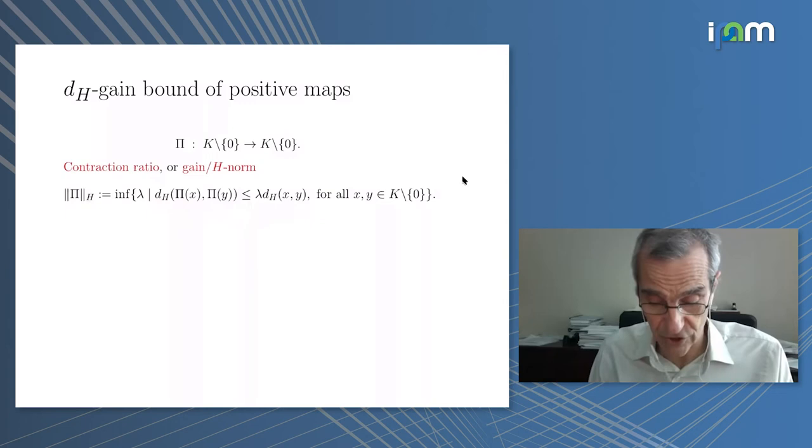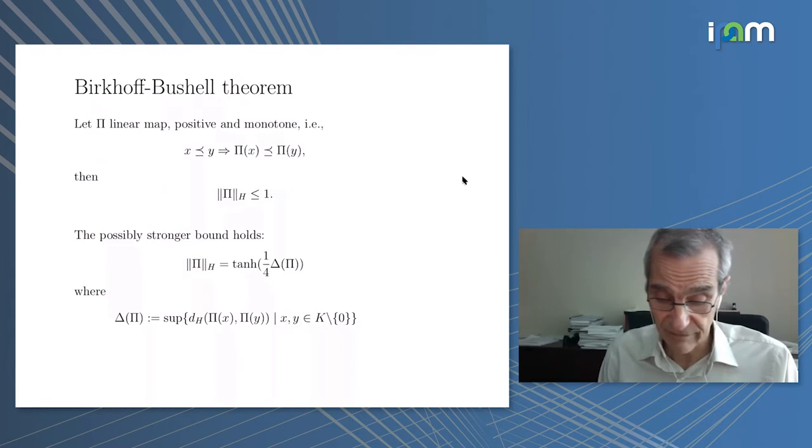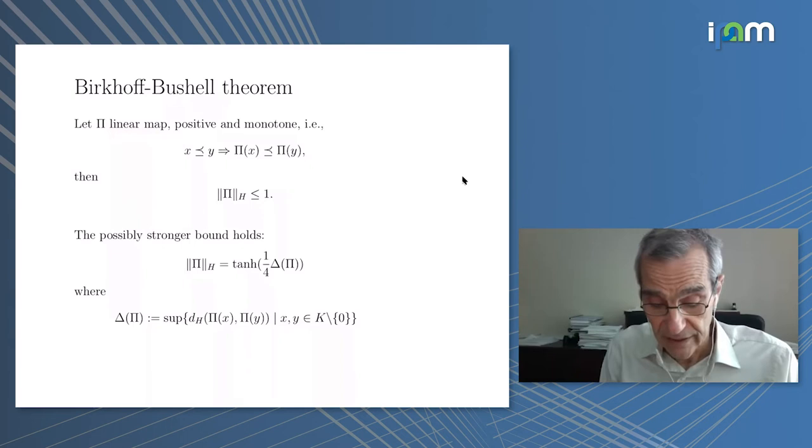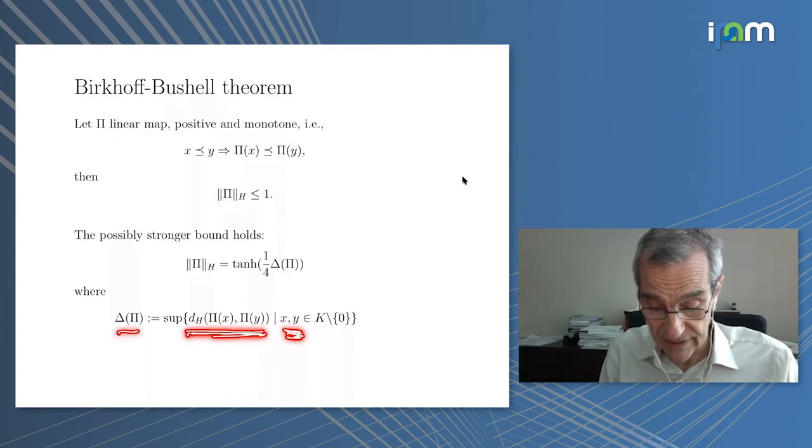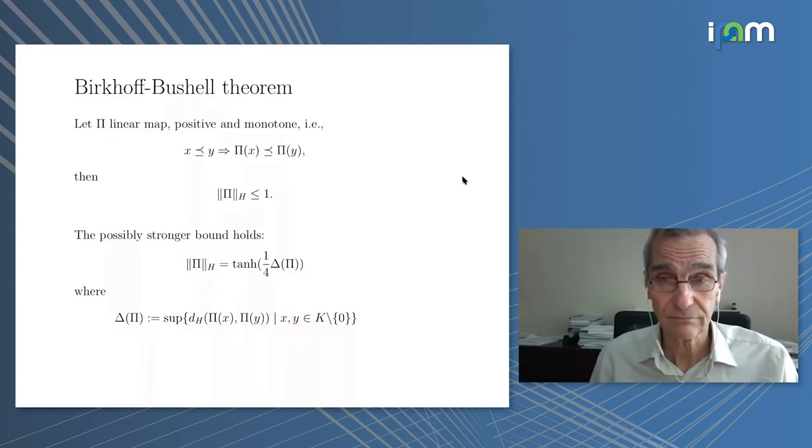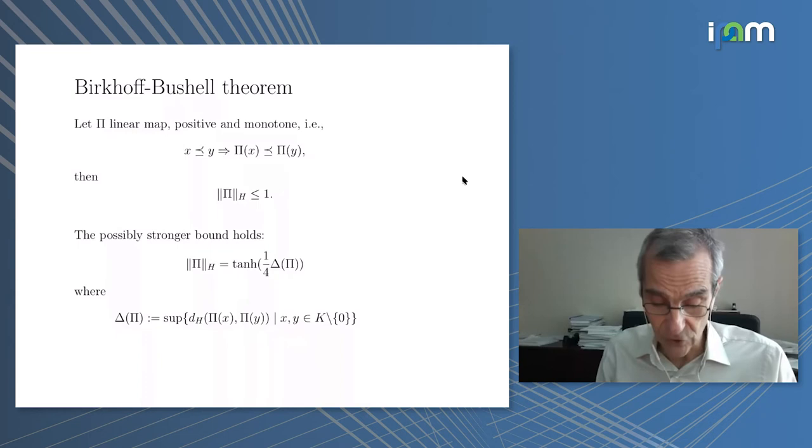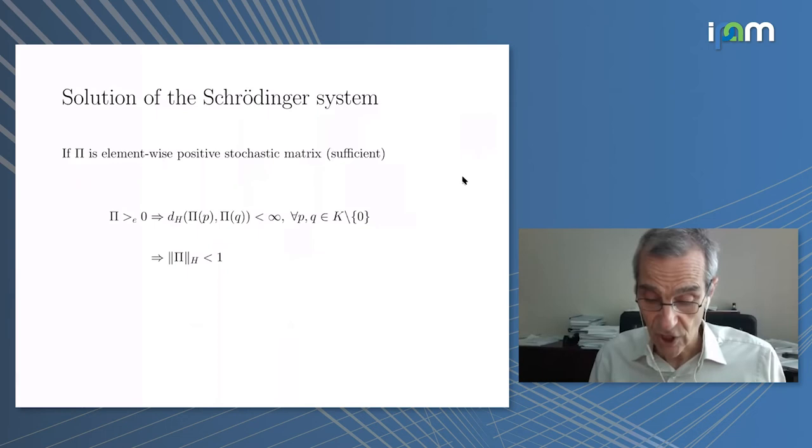A beautiful result, and I have here a very special version of this for linear maps of Birkhoff and Bushell, is that if you have a map which is positive and monotone, and if it's linear, then it is automatically contracting. Moreover, if the diameter of the image of the map, so if you take elements in the cone, the positive cone, and you look at the distance between them, this is the diameter of the set. If the diameter is finite then the map π is strictly contracting. This bound here can be used effectively to have strict contractivity and then convergence of iterations.